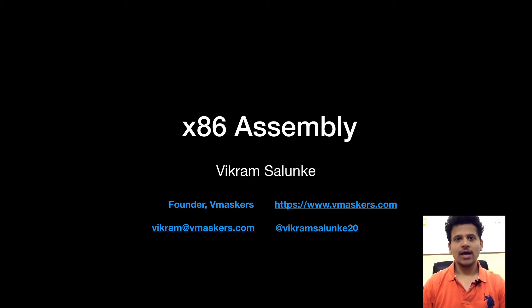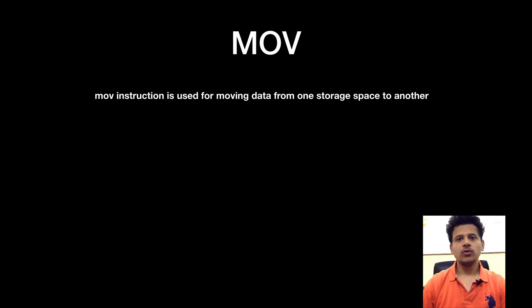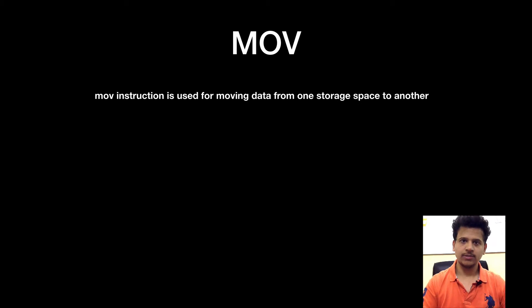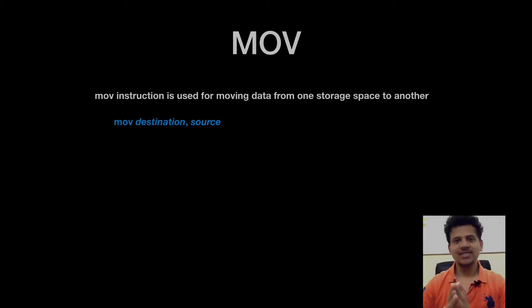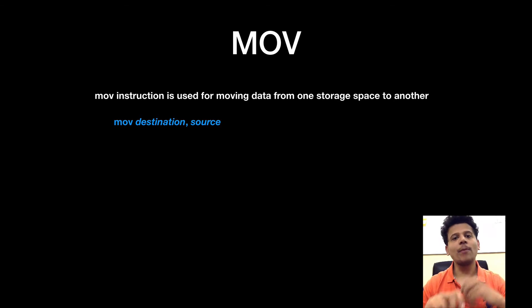Hey everyone, I am Vikram Salunke and welcome to another video of x86 assembly. In this video, we are going to see a MOV instruction. The MOV instruction is used for moving data from one storage space to another storage space. This is the syntax for a MOV instruction — the data from source will be copied to a destination. There are multiple forms of a MOV instruction; let's see them one by one.